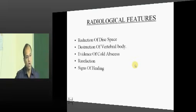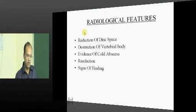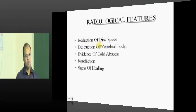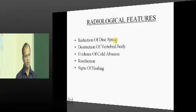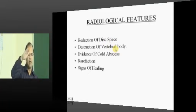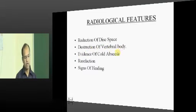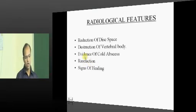On examination there may be localized tenderness, paravertebral spasm — these are classical features — and there may be kyphotic deformity if there is vertebral collapse. Radiological features are the most important. The commonest site of tuberculosis of the spine is the paradiscal region. So look at the disk space — if it is reduced significantly, think of tuberculosis first. The earliest finding is hazing of the end plate margins, then disk space narrowing, then destruction of the vertebral body, evidence of cold abscess as a soft tissue mass, severe osteopenia, and if treated, signs of healing with sclerosis.